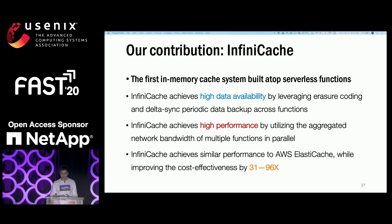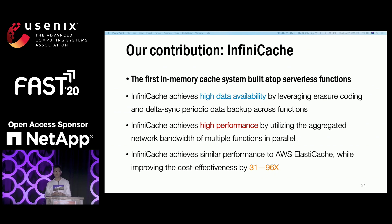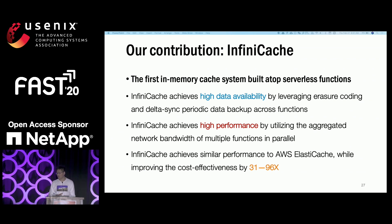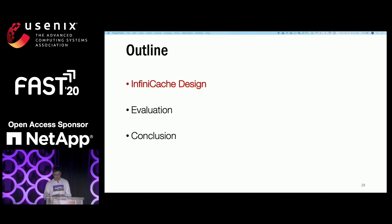To this end, we designed and implemented Infinity Cache, a memory caching system built atop serverless functions. Infinity Cache comprehensively combines multiple techniques including erasure coding, Delta Sync backup, and parallel I/O to build a holistic cost-effective, high-performance memory caching system while maintaining good data availability. Most importantly, Infinity Cache can improve cost-effectiveness by more than two orders of magnitude compared to AWS Elastic Cache.